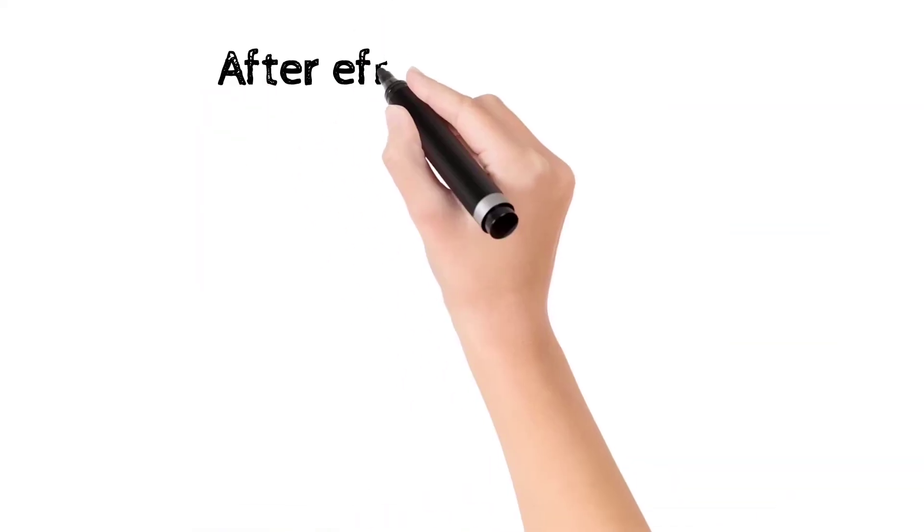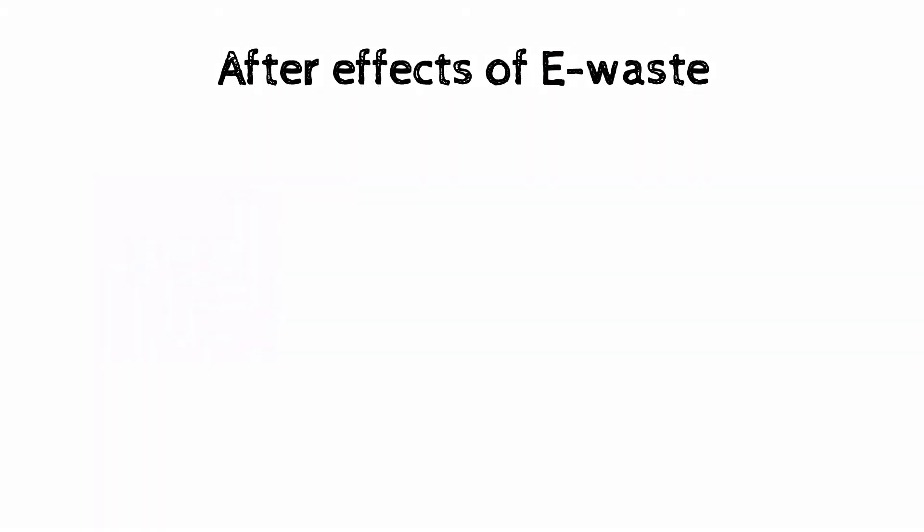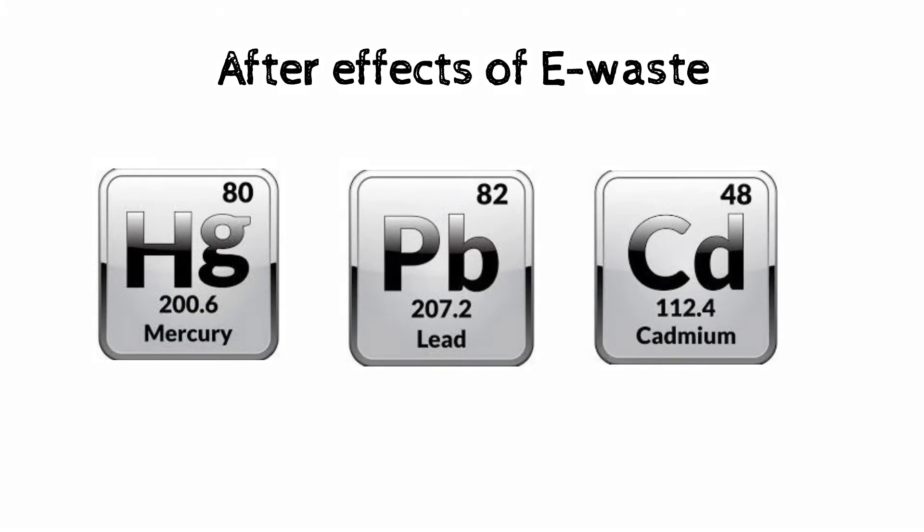But is this waste really the worst thing? What are the after effects of these e-hills? Why should we be concerned about e-waste? Electronic waste is not just waste—it contains some very toxic substances such as mercury, lead, cadmium, and brominated flame retardants.